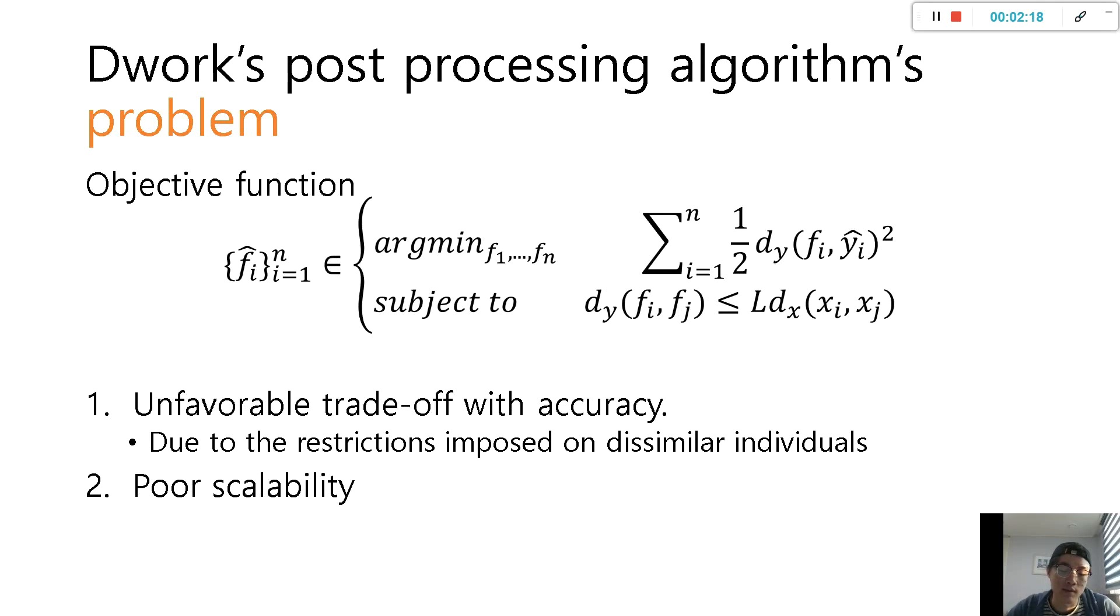This paper's algorithm starts with Dwork's post-processing algorithm. Dwork's algorithm's objective function is like this. The second line of equation shows that the restriction of individual fairness is applied to the global region. There are two problems with Dwork's equation. First, empirically Dwork's algorithm has bad trade-off with accuracy because it restricts individual fairness in the global region. Also, it has poor scalability because it needs much more time when dimension of y increases.